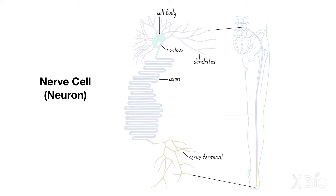In between that cell body in your spinal cord and your toe is a very, very long tube called the axon that connects these very distal parts of the same cell. This is essentially like shipping things between one part of the country and the other.